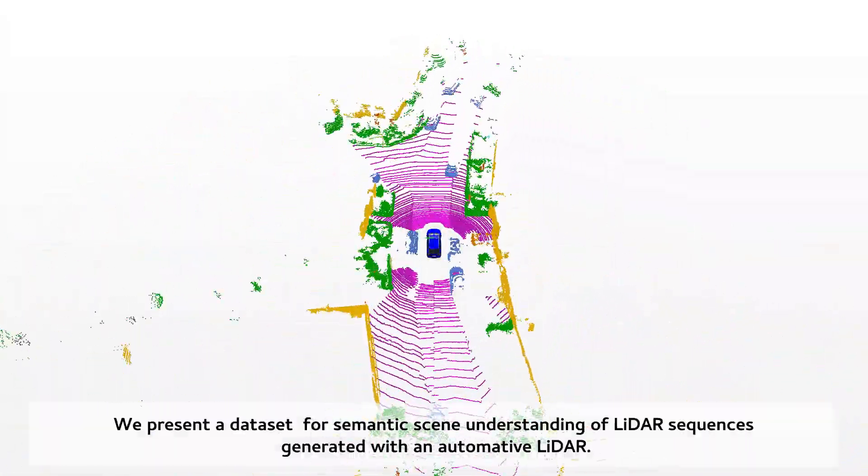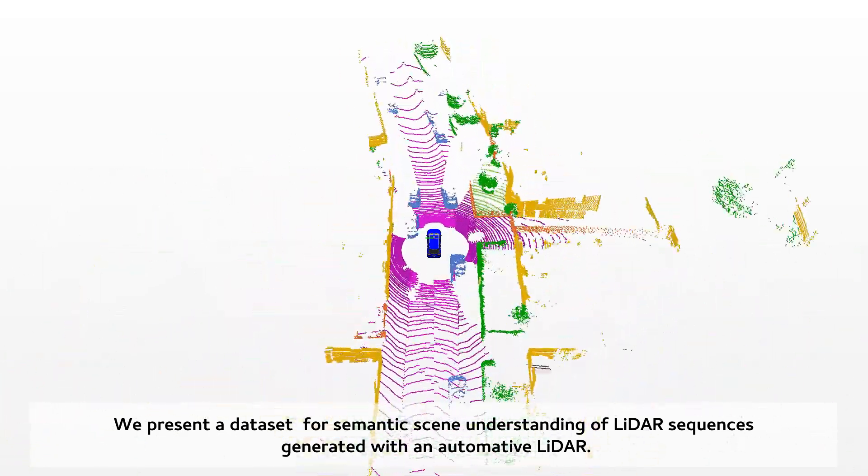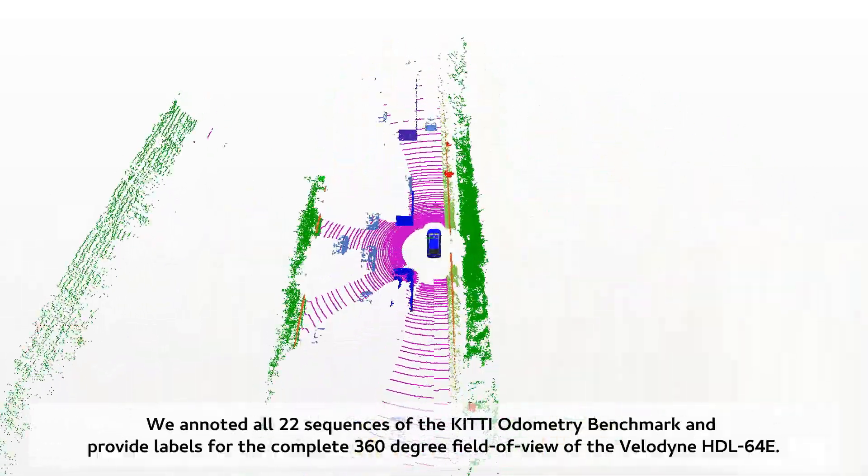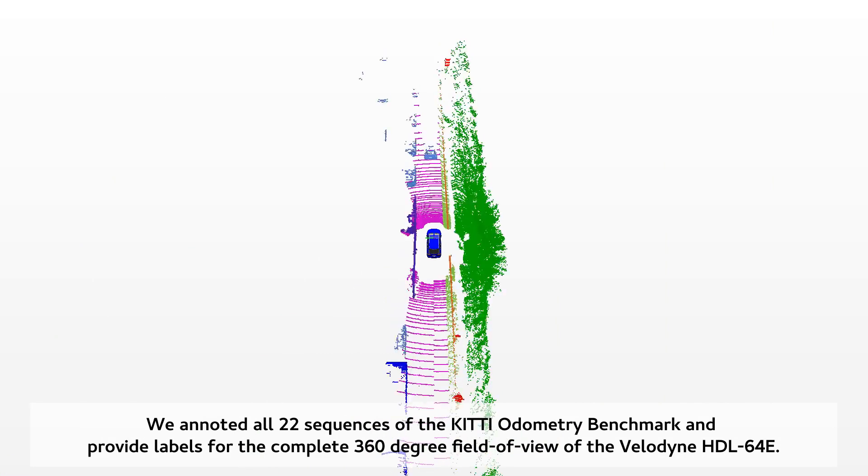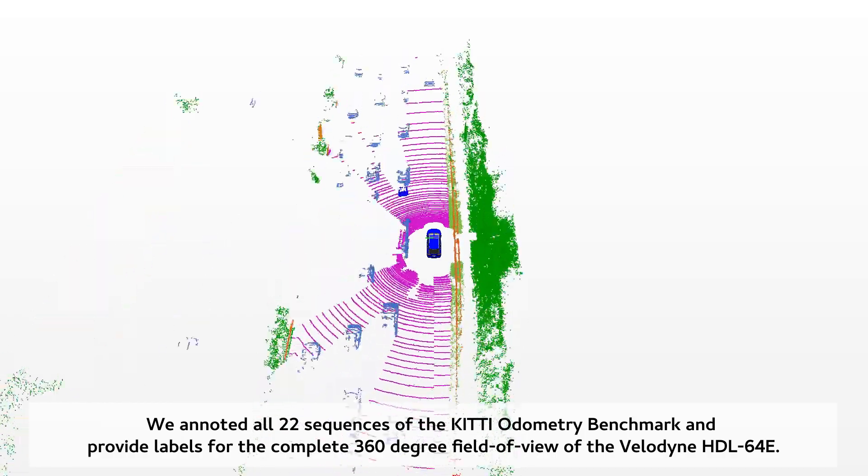We present a dataset for semantic scene understanding of LiDAR sequences generated with an automotive LiDAR. We annotated all 22 sequences of the KITTI Odometry Benchmark and provide labels for the complete 360-degree field of view of the Velodyne HDL-64E.